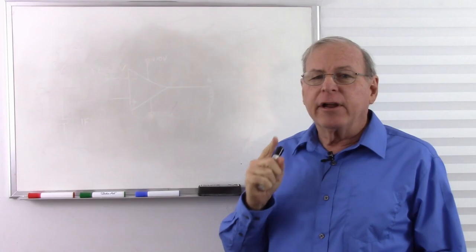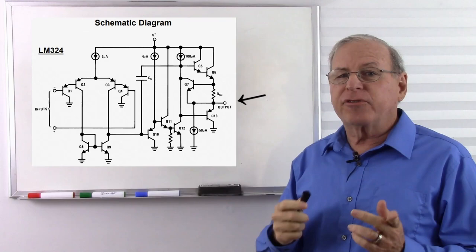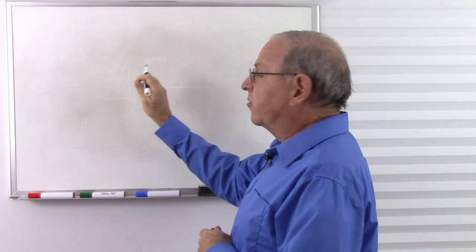An operational amplifier typically has a push-pull output such as this, which means that it can both sink and source current, and that circuit would have worked.